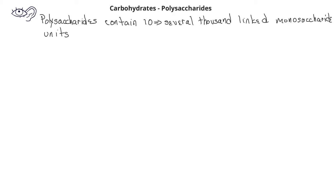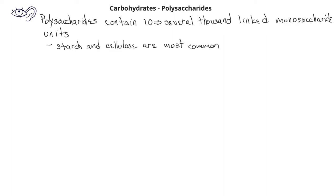Polysaccharides contain as few as 10 or as many as several thousand monosaccharide units joined together by glycoside bonds. The most common polysaccharides are starch and cellulose. In this video, we'll compare some of the different structural features of starch and cellulose.